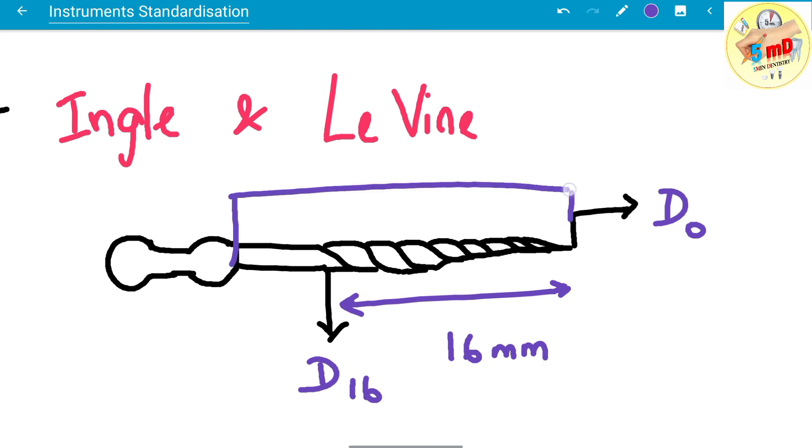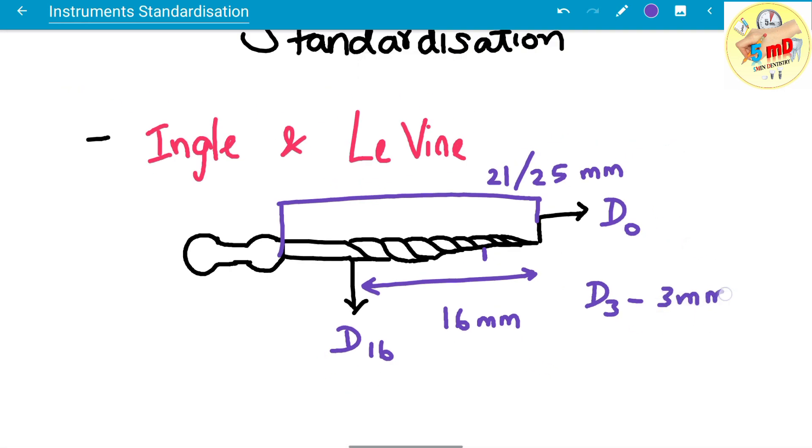Usually the length of the instrument can be 21 or 25 mm for commonly used instruments, or for some teeth with longer roots like canine, we have more than 25 mm also.